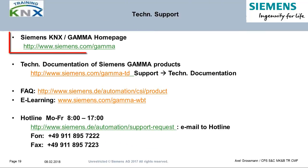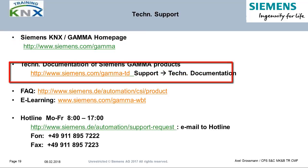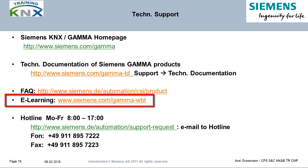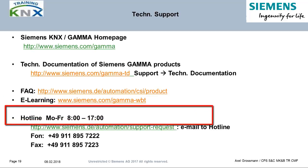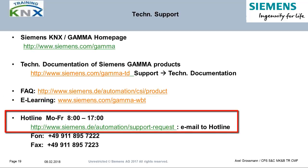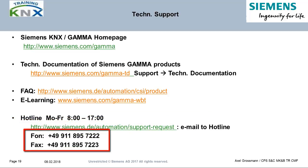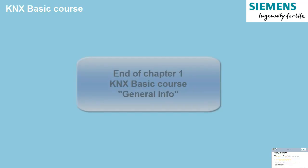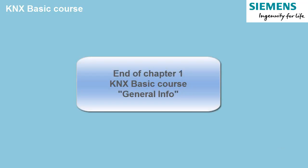On the website Siemens.com/gamma you will find further links and information, for example to catalogues, support, and FAQs. Gamma-WBT links to more KNX e-learnings. If you still need support, you may submit hotline tickets on the support request site or call the phone numbers in Germany. Many thanks for listening and viewing — you have reached the end of this chapter.